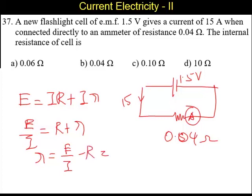What is E in this case? 1.5 volts. The current is 15 amperes. R is 0.04 ohms. So 1.5 divided by 15 is going to be 0.1 minus 0.04.